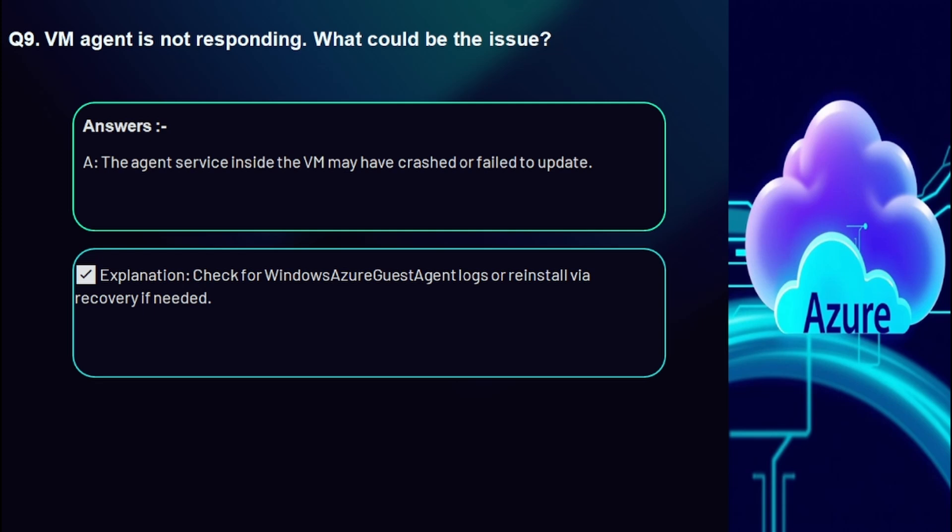Question 9: The VM agent is not responding — what could be the issue? The agent service inside the VM may have crashed or failed to update. You can check the Windows Azure Guest Agent logs or reinstall via recovery if needed. You can also use a PowerShell script to reinstall the agent.